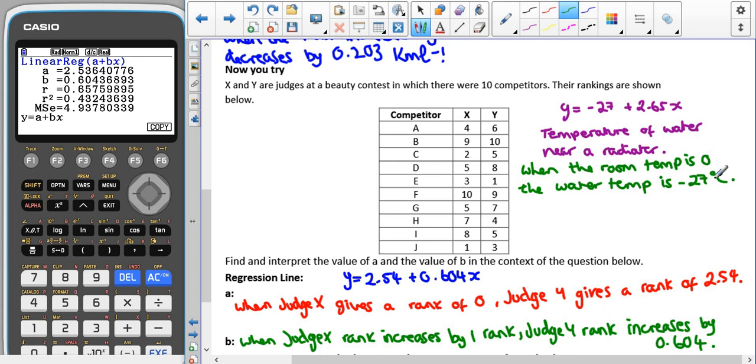However, that doesn't make any sense. As if it was minus 27 degrees C, it wouldn't be water anymore as it would have frozen. So in this case here, you'd have to add an extra step on there to say, however, at this temperature, the water would be frozen.